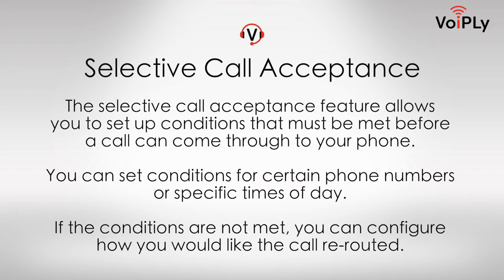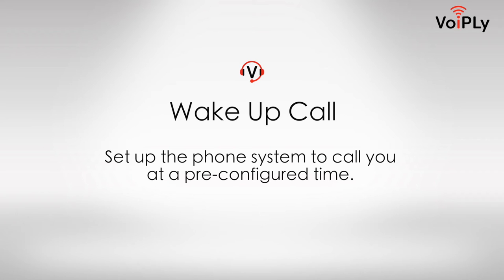Selective Call Acceptance: Allows you to set up conditions that must be met before a call can come through to your phone. You can set conditions for certain phone numbers or specific times of day. If the conditions are not met, you can configure how you would like the call rerouted. Wake Up Call: Set up the phone system to call you at a pre-configured time.